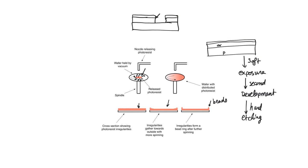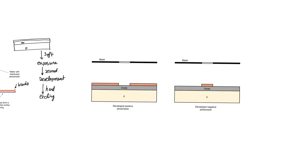There are two types of photoresist: negative photoresist and positive photoresist. The distinction is which part of the photoresist can be stripped away by the solvent. In positive photoresist, the parts that have been exposed to light will dissolve in the solvent. In negative photoresist, the unexposed parts can be stripped away. In all the examples covered here we will be using positive photoresist, but negative photoresist is also a possibility.